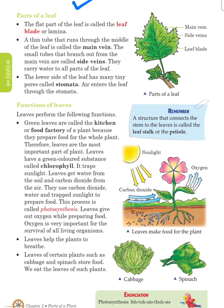Parts of a leaf: the flat part of a leaf is called the leaf blade. A thin tube that runs through the middle of the leaf is called the main vein. The small tubes that branch out from the main vein are called side veins. They carry water to all parts of a leaf. The lower side of a leaf has many tiny pores called stomata. Air enters the leaf through the stomata.